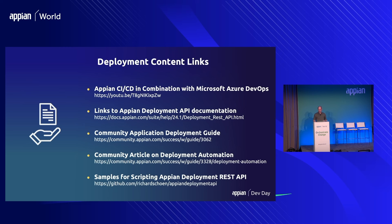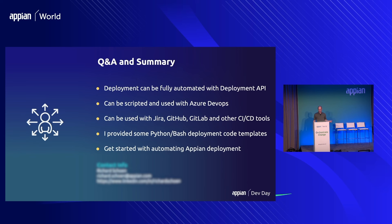So what did we cover? In about 23 minutes: how deployment can be automated with the Appian deployment API, and how deployments can be scripted. All these concepts — even though I named the title Azure DevOps — will work with GitLab, GitHub, or any other toolset you might be using. I've provided the Git repository link, and I hope to hear from some of you that you're actually using these examples and even suggesting pull requests. Get started with automating your Appian deployment!